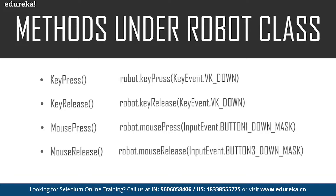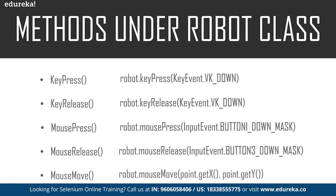We have the mouse release method, which is used to release the pressed button of the mouse. With this particular command, it helps in releasing the pressed button. Last, we have the mouse move method, which moves the mouse pointer to the X and Y coordinates. The coordinates of the element are passed in this mouse move method. The command is: robot.mouseMove and specify the coordinates of the X axis and the Y axis.